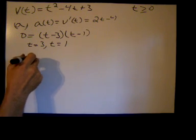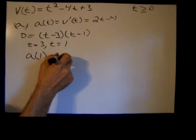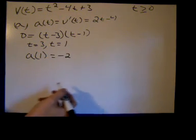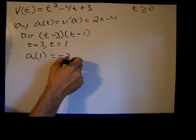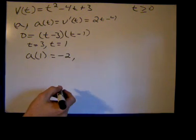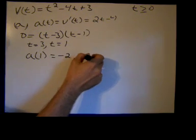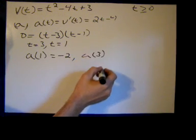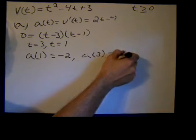And to answer the question, a of 1 would equal negative 2. Acceleration can be negative, and it didn't give us any units. It's decelerating. So a of 1 is negative 2, and a of 3 is 2 times 3 minus 4, which is 2. So it's accelerating.